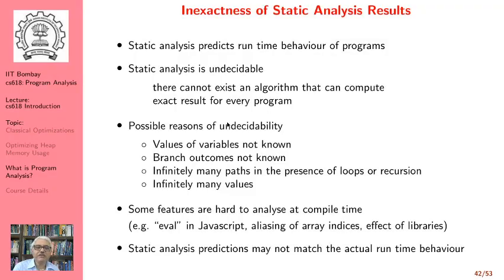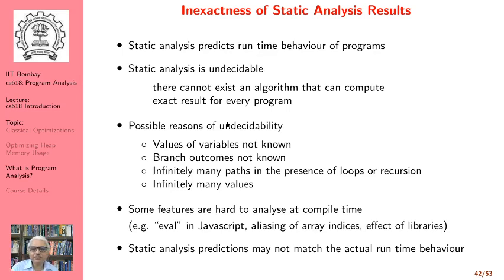By undecidability, we mean there cannot exist an algorithm that can compute an exact result for every program. The possible reasons for undecidability are many: values of variables are not known at compile time, branch outcomes are not known at compile time, there are infinitely many paths in the presence of loops or recursion, and infinitely many possible values of variables. Even if some analysis is decidable, some features are hard to analyze at compile time because they depend on runtime information, such as eval in JavaScript, aliasing of array indices, and effects of libraries.